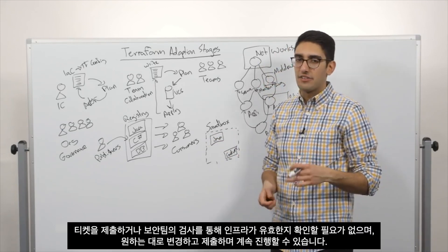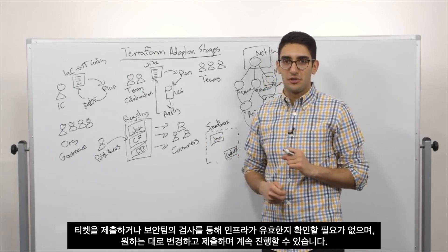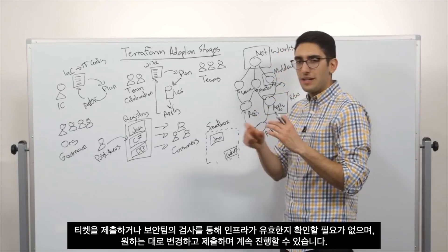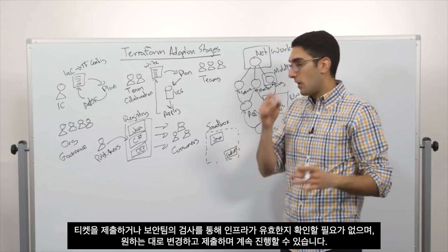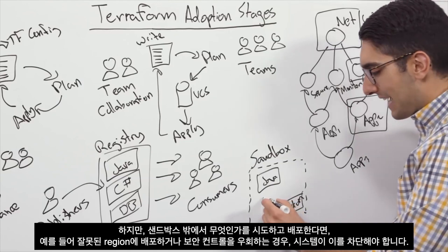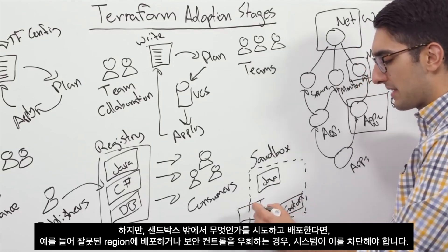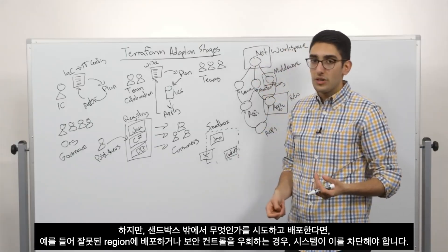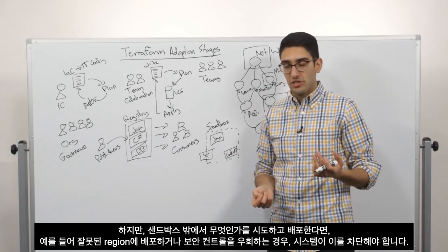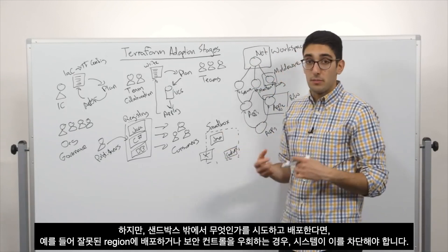You don't have to file a ticket and have a security team check and make sure this infrastructure is valid. You can make your change, submit it and go on with your way. But what we'd like to have happen is if you try and deploy something that steps outside of the sandbox, deploying to the wrong region or bypassing security controls, we'd like the system to prevent this.